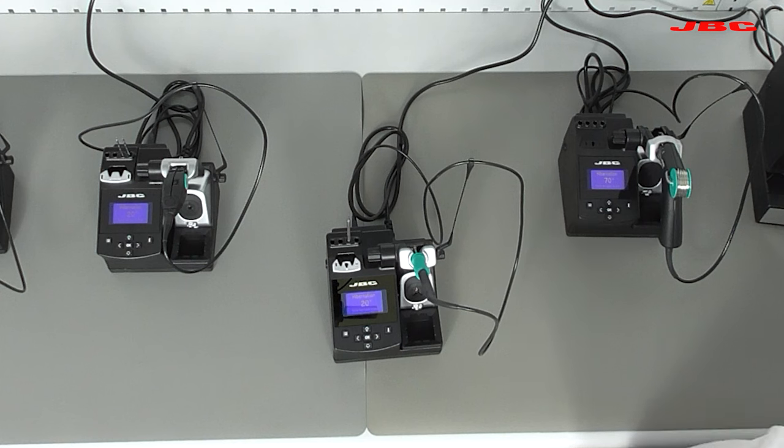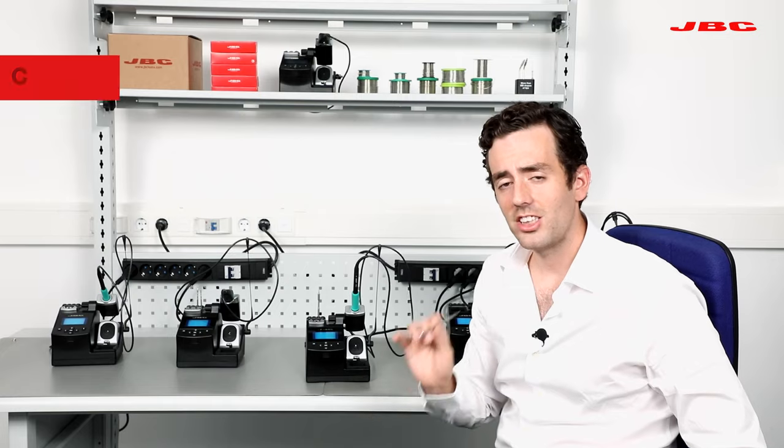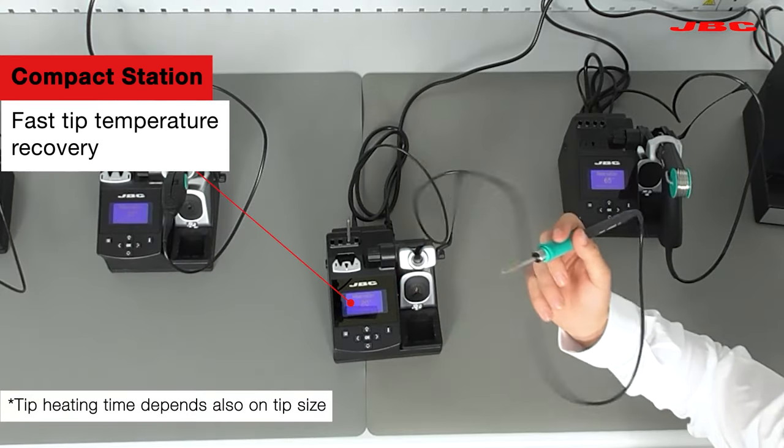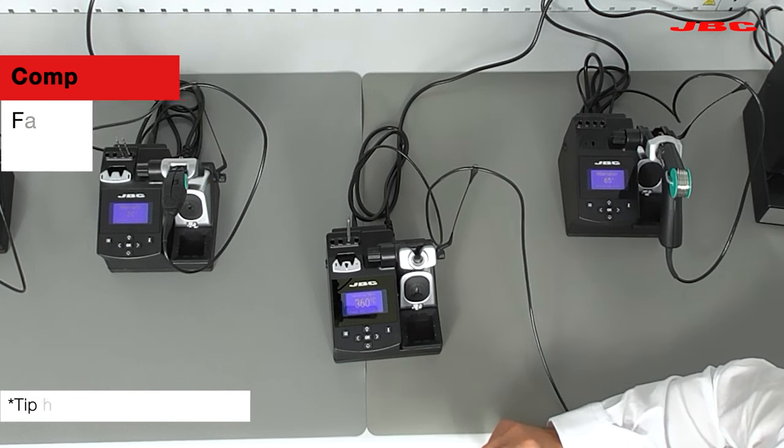As well, you can see it is called CD because it's a compact station. It has the smallest footprint in the market. The stations heat up in only two to three seconds. So the moment that I pick it up, it goes from room temperature all the way to 350 in a matter of three seconds.